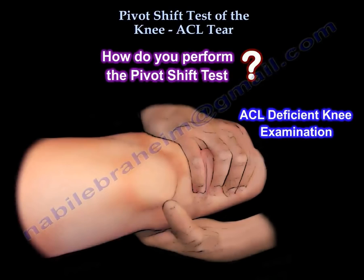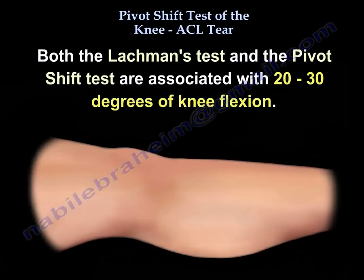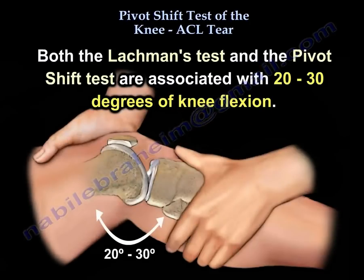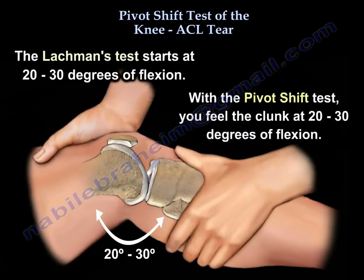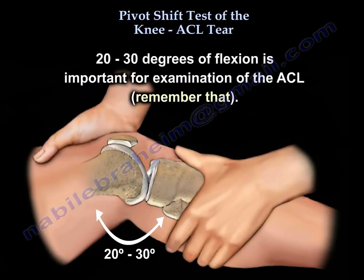How do you perform the pivot shift test? It is really an examination for the ACL-deficient knee. Both Lachman's test and the pivot shift test are associated with 20 to 30 degrees of knee flexion. Lachman's test starts at 20 to 30 degrees of flexion. With the pivot shift test, you feel the clunk at 20 to 30 degrees of flexion. Remember that.